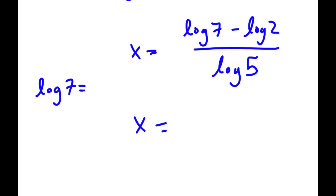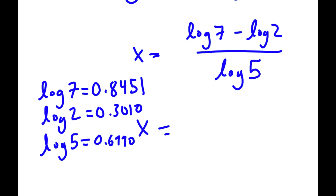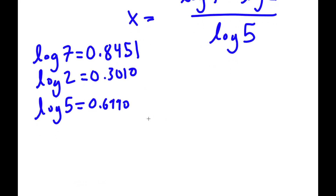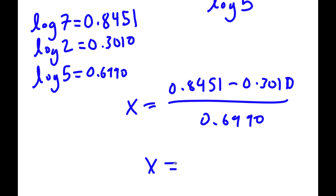Log 7 is equal to 0.8451, log 2 is equal to 0.3010, and log 5 is equal to 0.6990. So now I have x is equal to 0.8451 minus 0.3010, all over 0.6990, meaning x is equal to 0.5441.